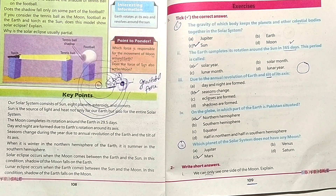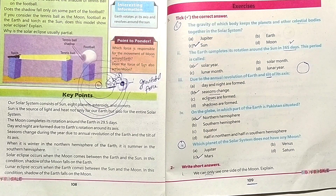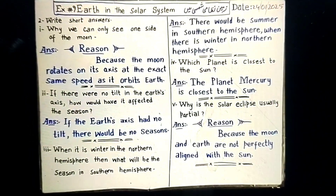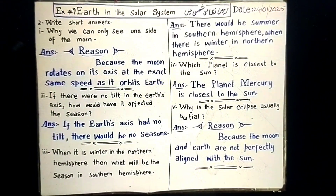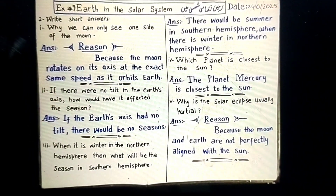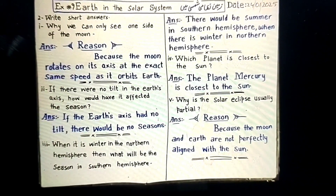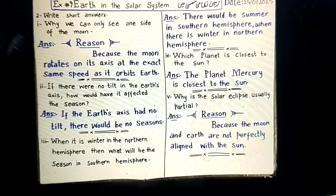Now the short answer questions. We have a screen and we have a page on the screen. Exercise 9: Earth in the solar system.